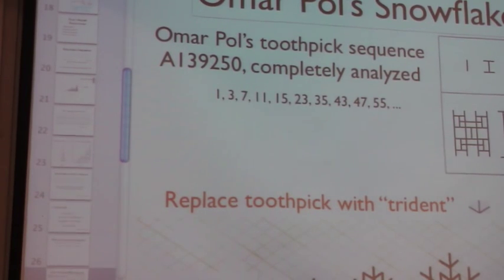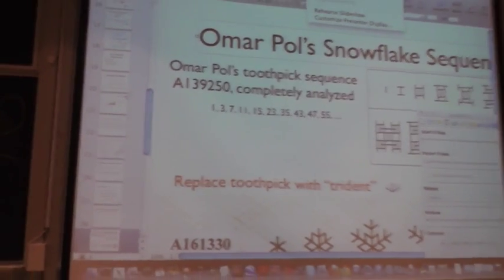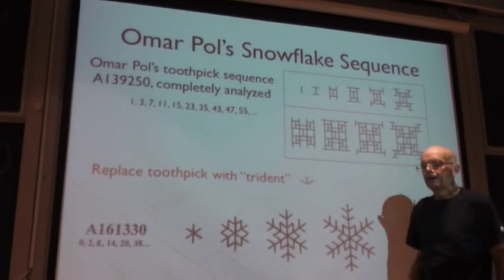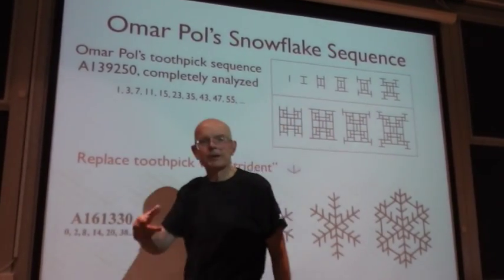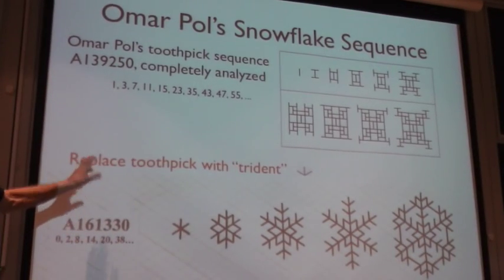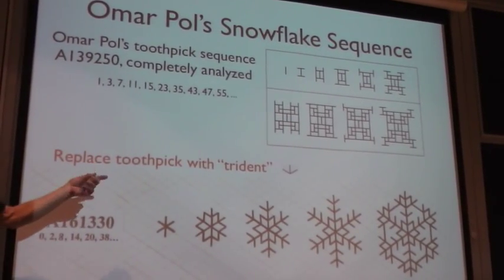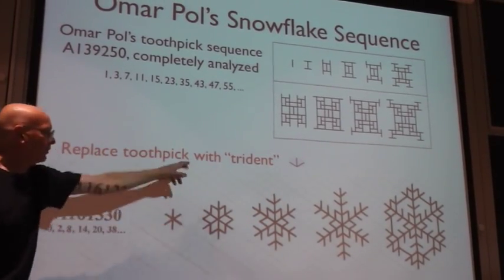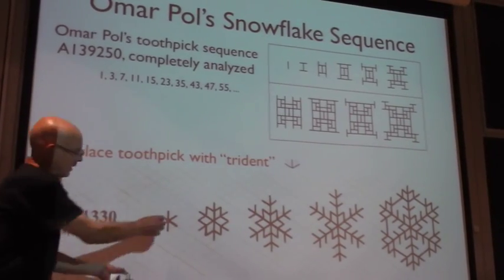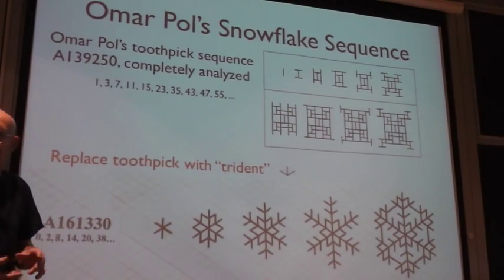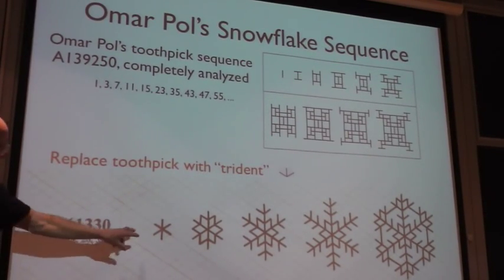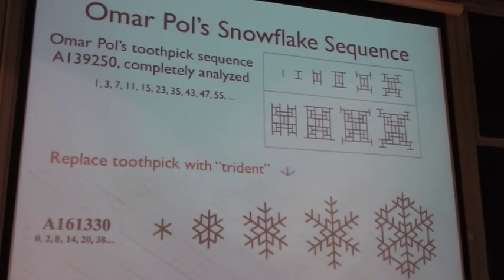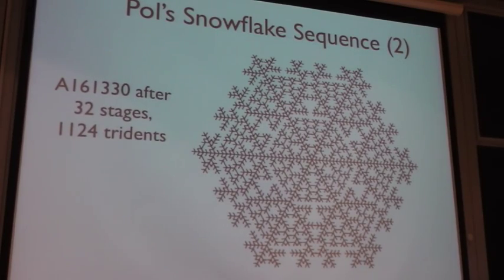Here's a new sequence. So the basic toothpick sequence we understand fully. This one is instead of toothpicks, we use three-pronged toothpicks that look like this. They're like a bird's footprint. And you start off with two of them back to back. So here are two tridents back to back. That's stage one of the iteration. And then at each free end you add one of these. And it looks like that.